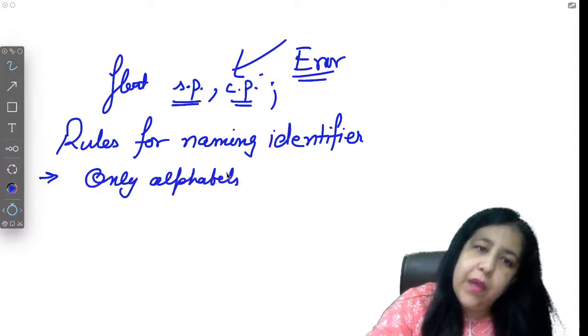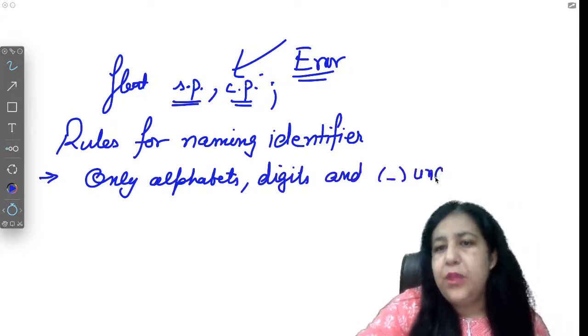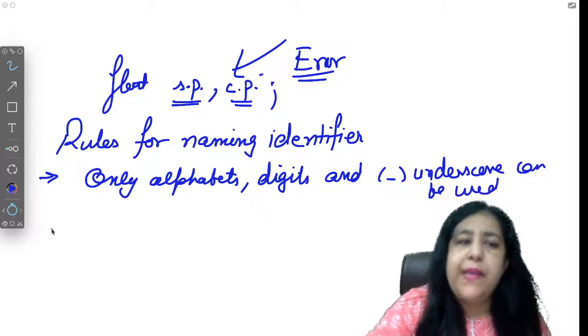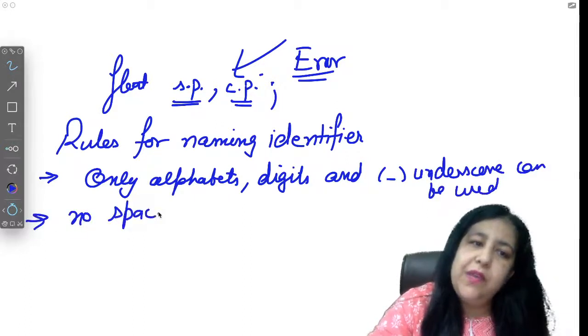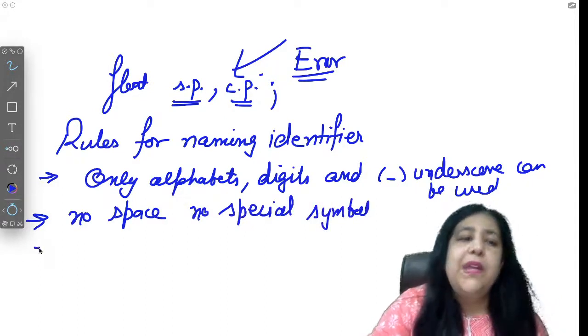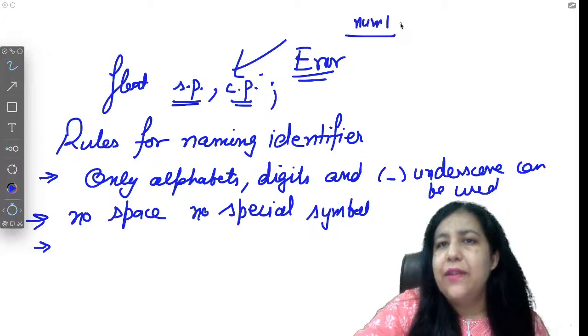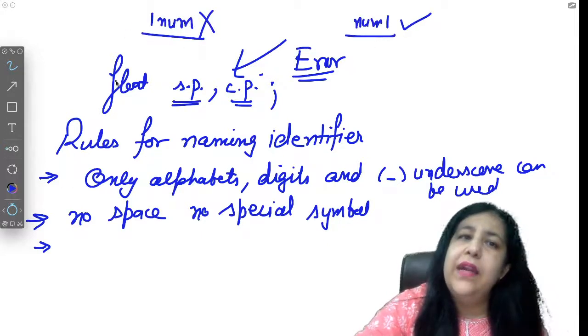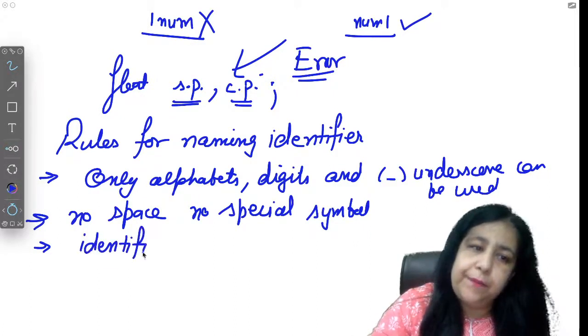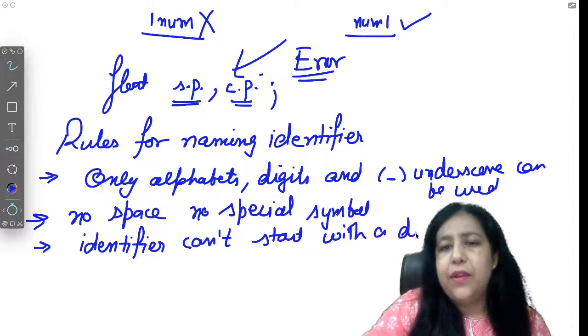The first rule is that only alphabets, digits, and underscore - one symbol - can be used. No space, no special symbol. So only alphabets, digits, and underscore. Underscore is a special sign you use in email addresses also, so that can be used. No space, no special symbol can be used except underscore. After that, the next thing is that digits can come later, anywhere, like num1 you can take, that's perfectly fine. But if you take 1num, that's wrong. We can't start the name with a digit. So identifier cannot start with a digit.